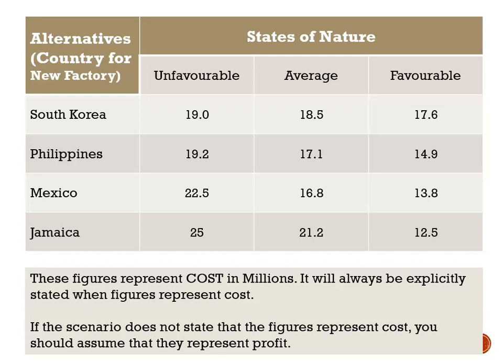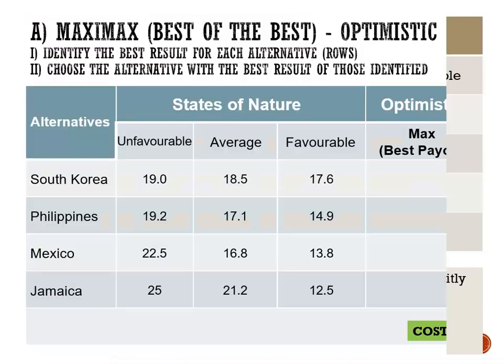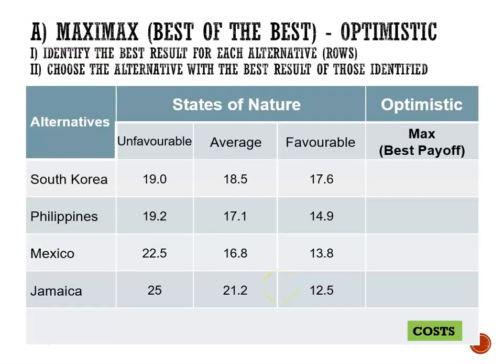We're looking at a payoff table where we're choosing a country for our new factory. The alternatives — our possible choices — are South Korea, Philippines, Mexico, or Jamaica. The figures in this payoff table represent costs in millions, so our goal will be to pay the lowest possible cost. Step one is to identify the best possible result for each location.